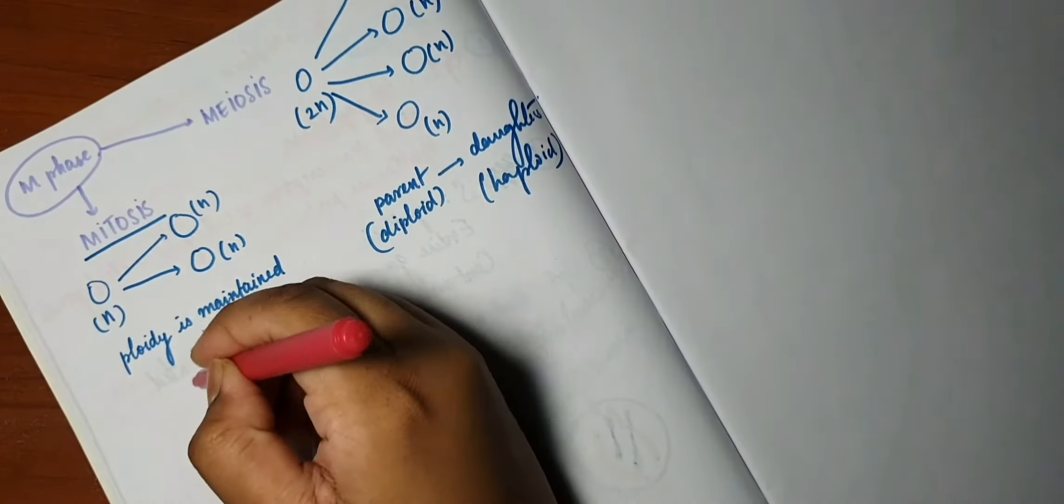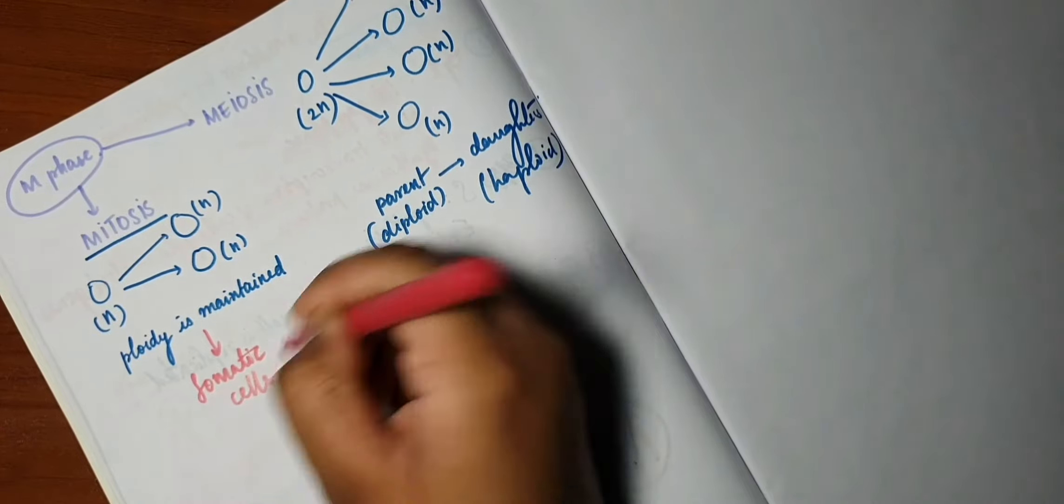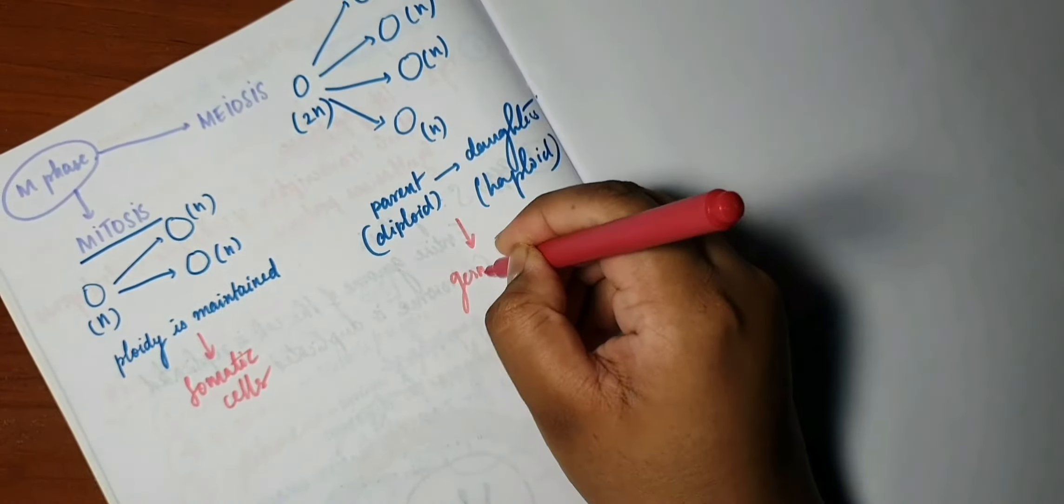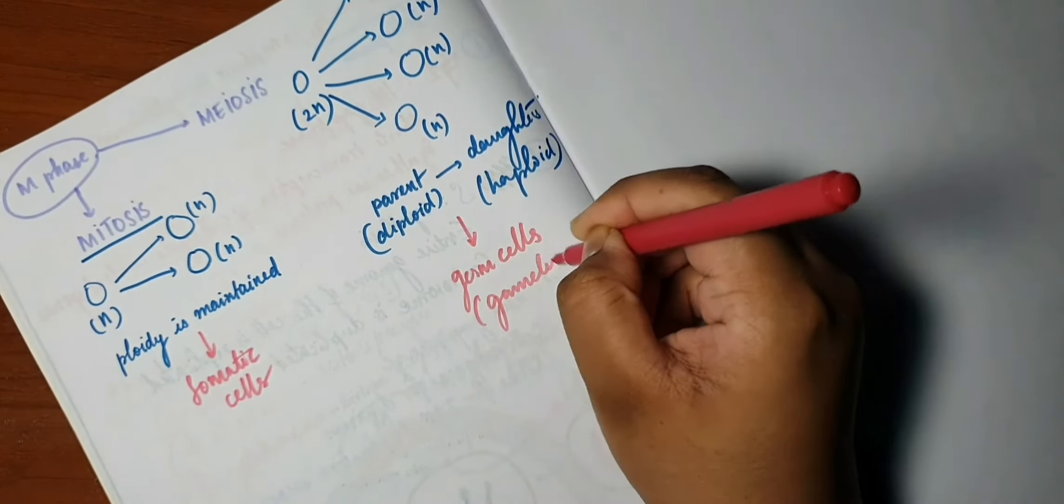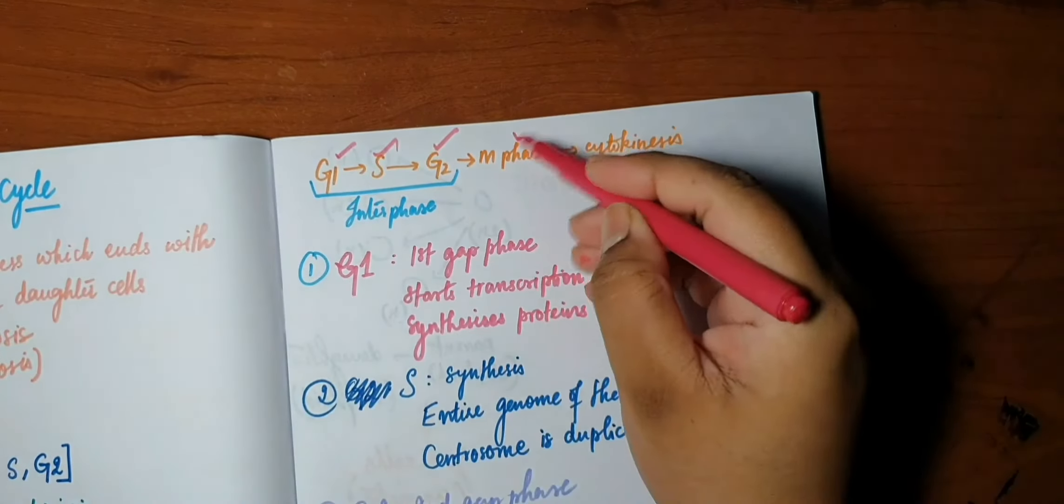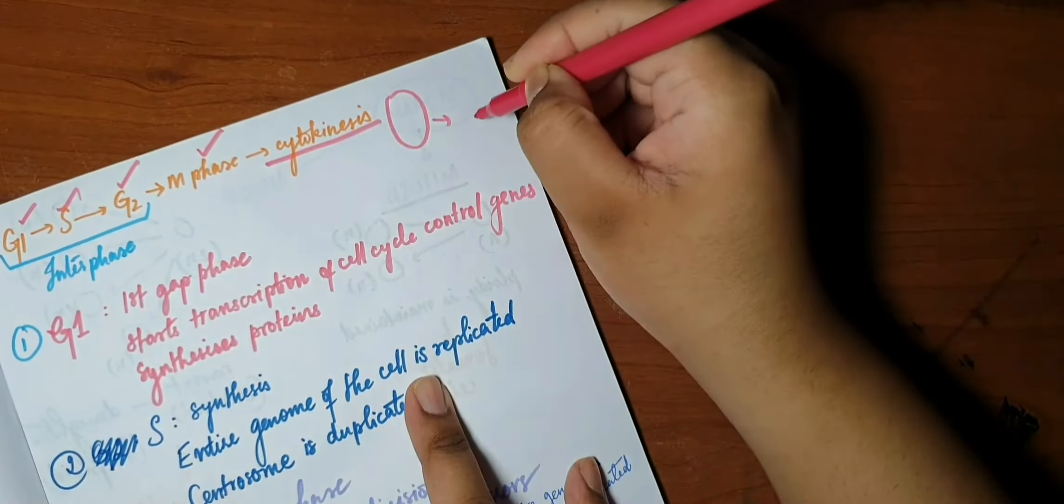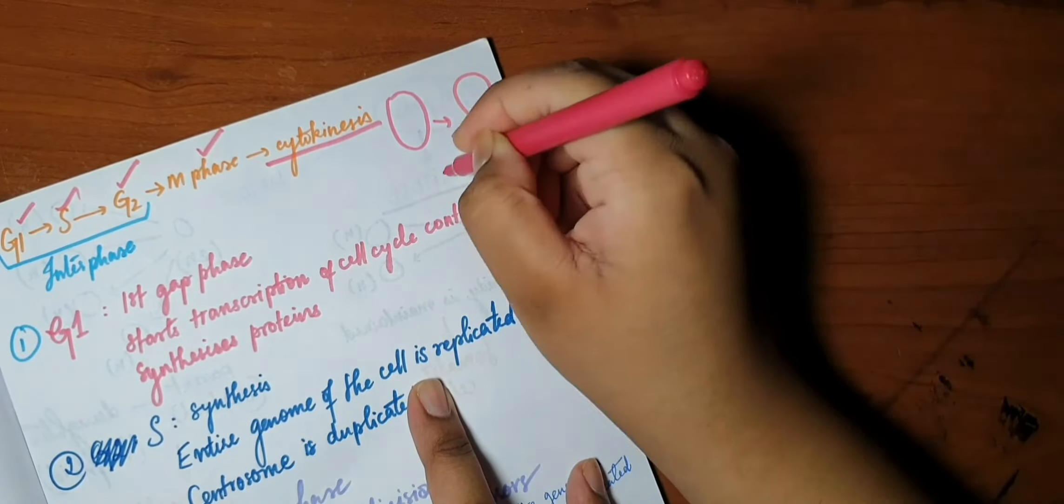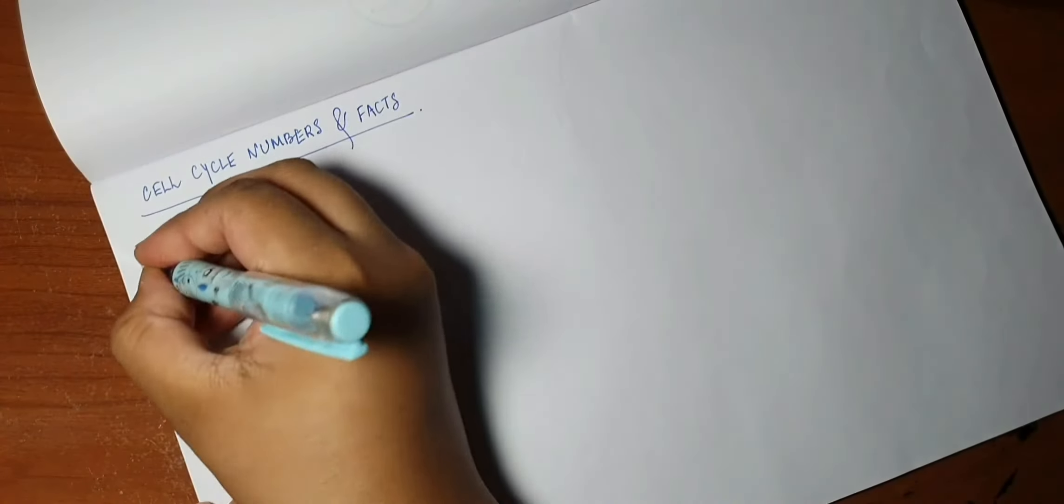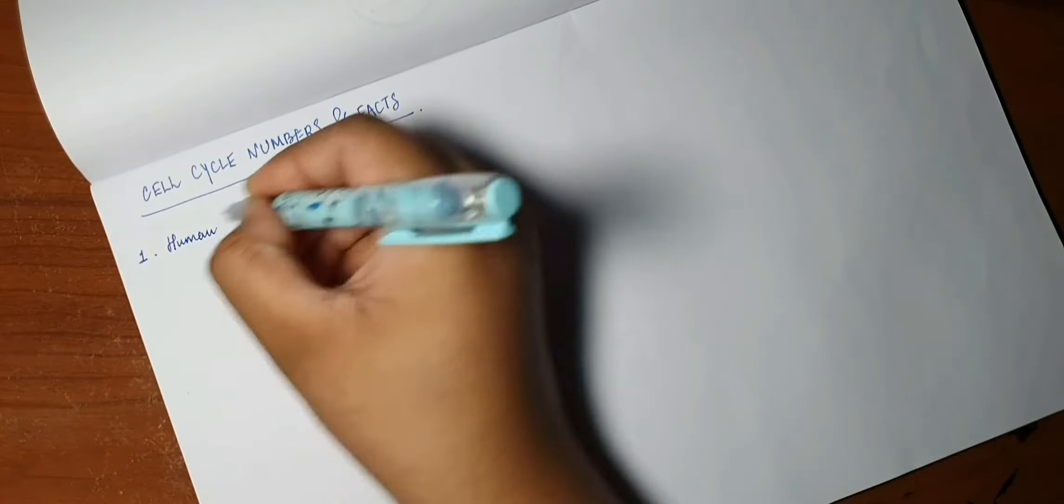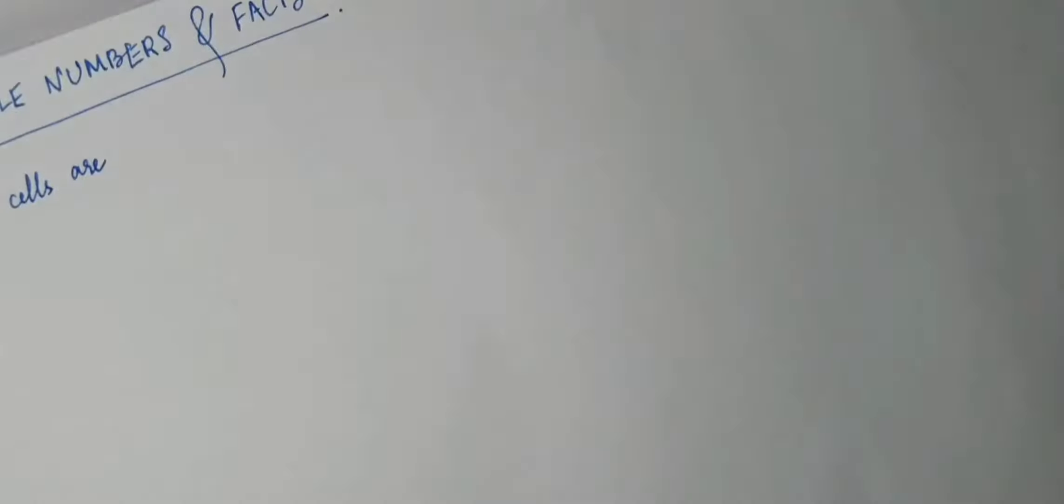In meiosis, a diploid parent divides into four haploid daughter cells, so the ploidy is not maintained. In meiosis, the genetic material is halved. So mitosis is what the somatic cells undergo, and meiosis takes place in the germ cells or the gametes. So the next is cytokinesis. What happens in cytokinesis is the cytoplasm develops a furrow and it divides into two daughter cells.